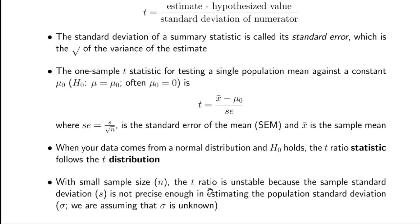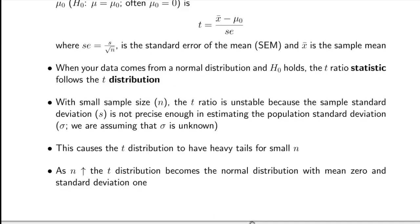If you're estimating the standard deviation and your sample size were very large and your data were normally distributed, you could almost pretend the standard deviation was known. But when n is small, the standard deviation estimate can be quite imprecise. The t-ratio recognizes this by referencing a t-distribution which can have heavy tails for small n. As n goes up without bound, the t-distribution becomes the normal distribution with mean 0 and standard deviation 1.